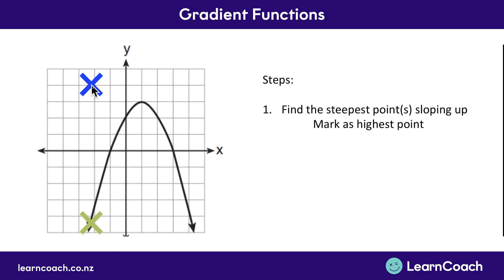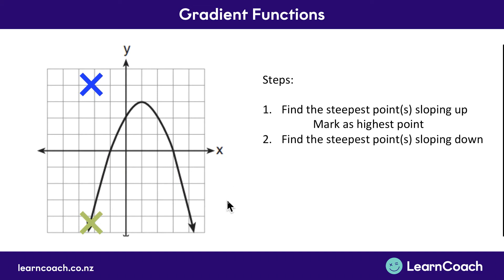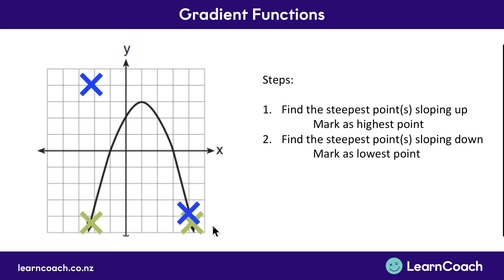Then you look for the steepest point sloping downwards — that's your second step. In a parabola that's on the right-hand side. On your gradient function that's the steepest negative gradient or negative slope, therefore we mark that lowest on our graph.